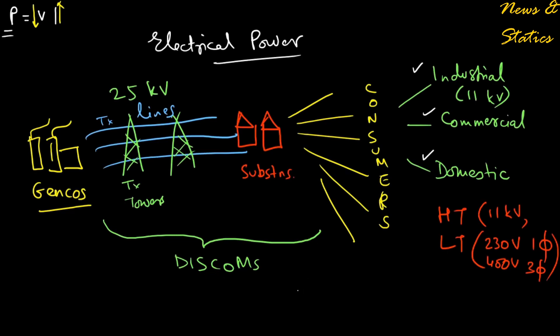There's a tariff structure with several slabs. At lower slabs, if you consume less than a certain amount of units, you pay extremely low amounts per unit. This is also prone to misuse. All of these factors taken together don't make the tariff structure in India cost reflective.